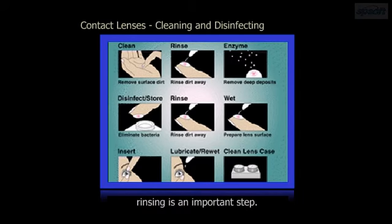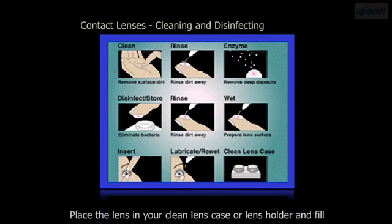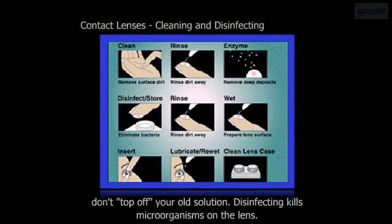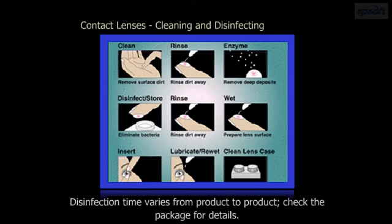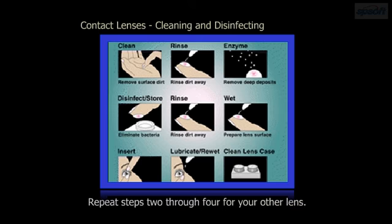Rinsing is an important step. Place the lens in your clean lens case or lens holder and fill with fresh solution. Don't top off your old solution. Disinfecting kills microorganisms on the lens. Disinfection time varies from product to product — check the package for details. Repeat steps 2 through 4 for your other lens.